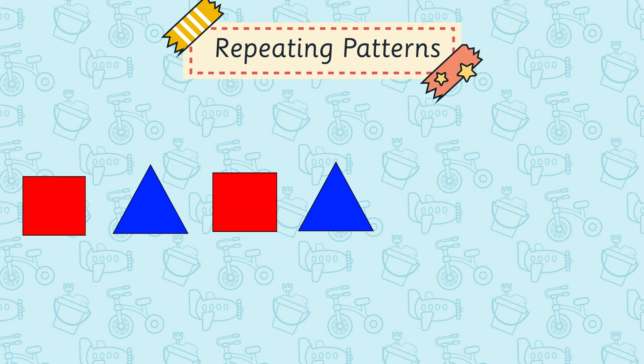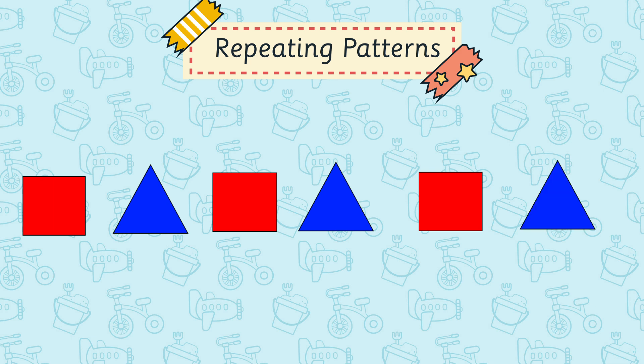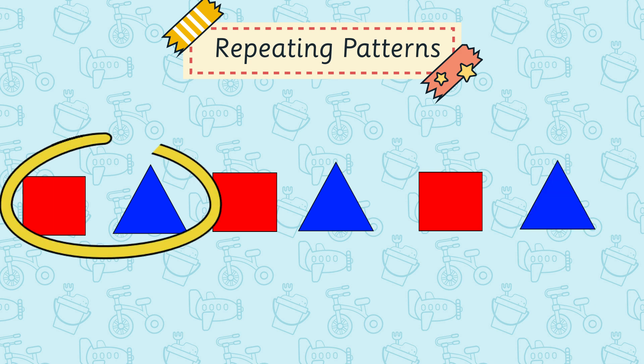You're right! The next shape in this pattern would be the red square, and then after the red square would be a blue triangle, because the red square and the blue triangle are repeating over and over again. Well done everyone, I hope you're ready for the next pattern.